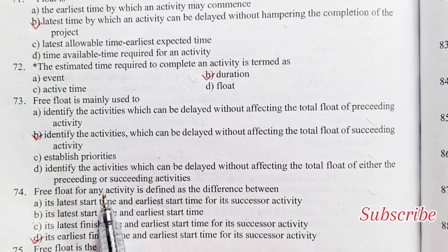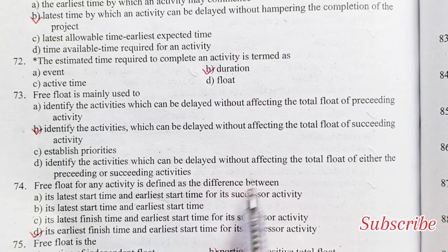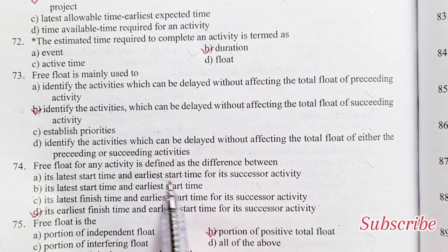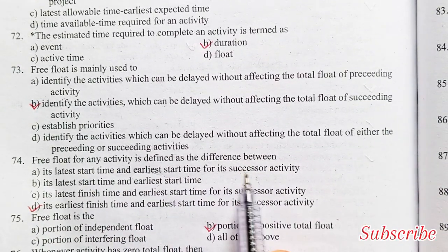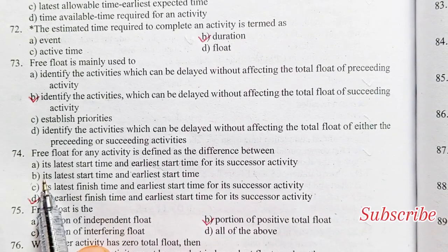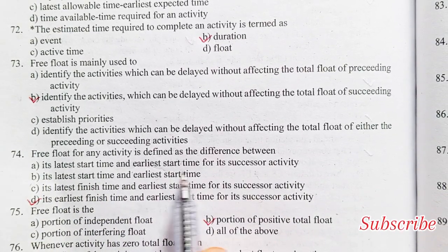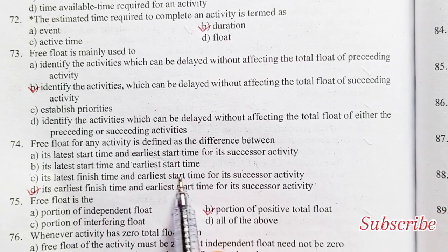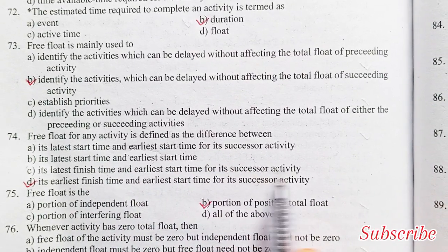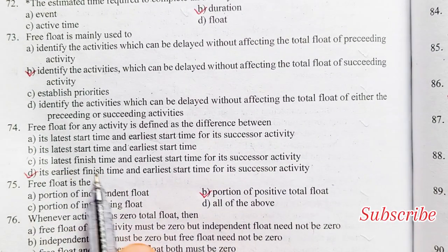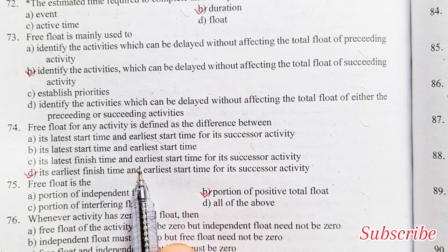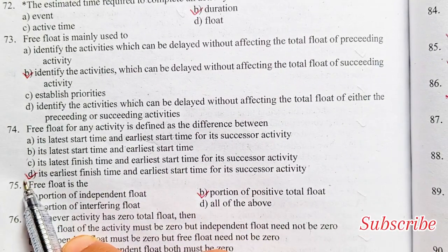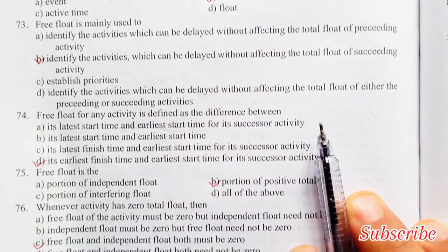Free float for any activity is defined as the difference between its latest finish time and earliest start time for its successor activity. Option D is the right answer.